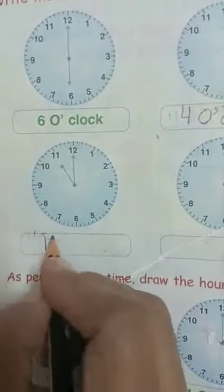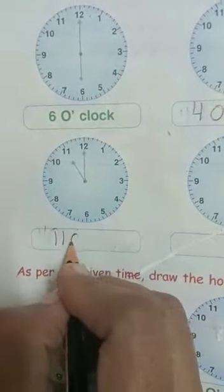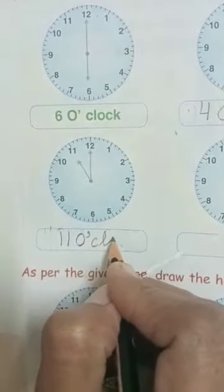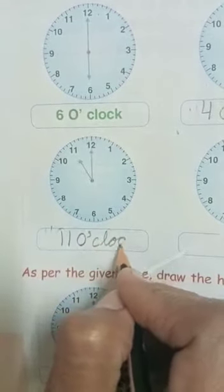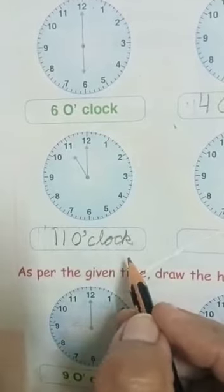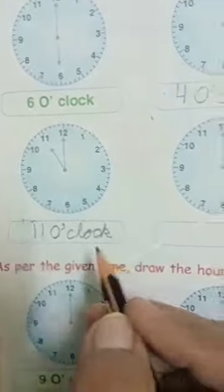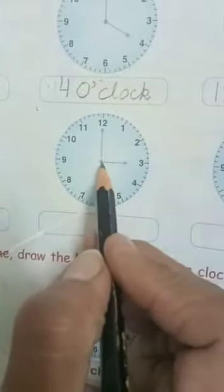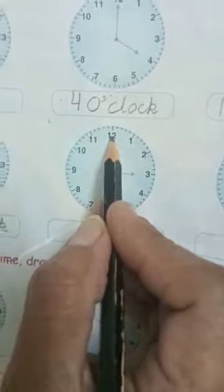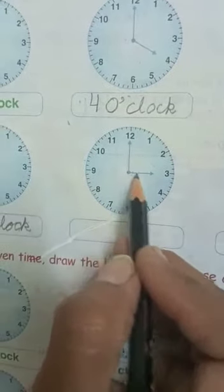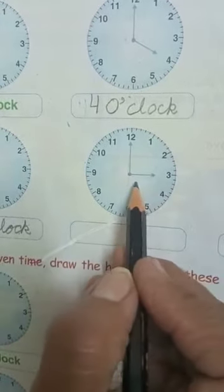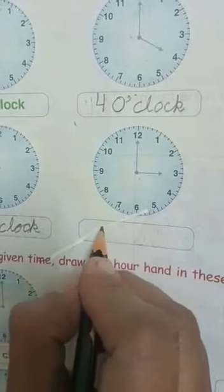Now next. Again the minute hand is on 12 and the hour hand points towards 3. It means the time is 3 o'clock.